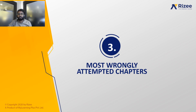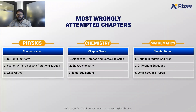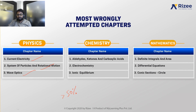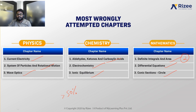Let us see the most wrongly attempted chapters — those where more than 50% of students have gone wrong. In Physics: current electricity, system of particles, and wave optics. These are in the top 10 chapters list yet students are going wrong here. In Chemistry: aldehydes, ketones and carboxylic acids, electrochemistry, and ionic equilibrium. In Mathematics: definite integrals and areas, differential equations, and conic section circles. These will be major focus areas.